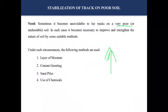The next option would be the stabilization of the poor soil and make use of the locally available material. Now the process of improving the strength of the soil and the nature of soil using suitable methods, we call it as the stabilization of track on the poor soil. Some of the methods that will be used to stabilize your poor soil is layer of muram, cement grouting, sand piles and the use of chemicals.